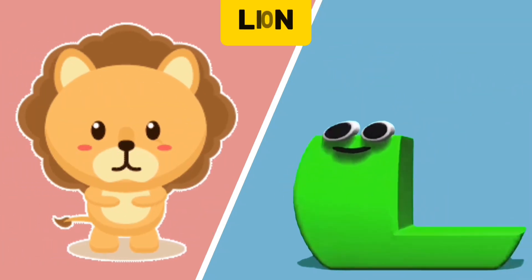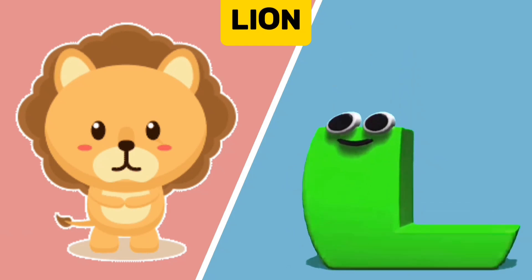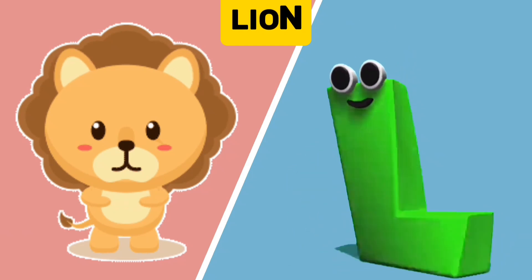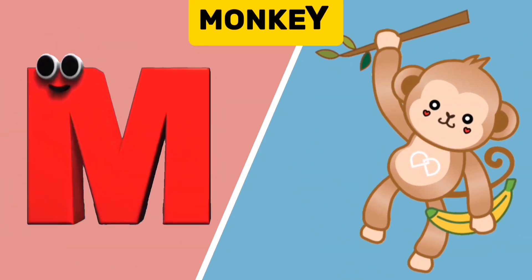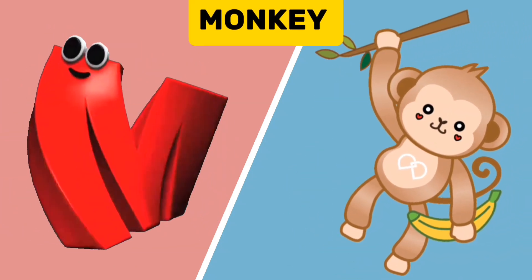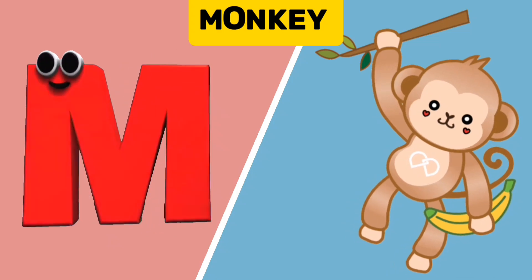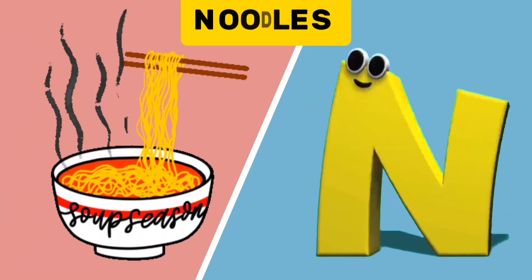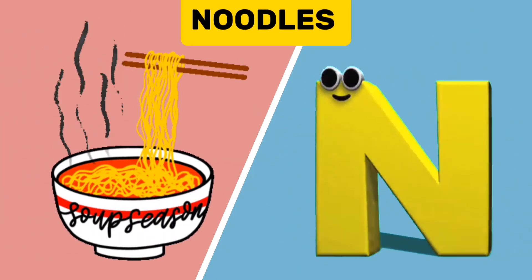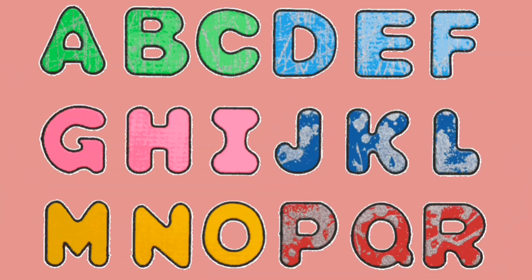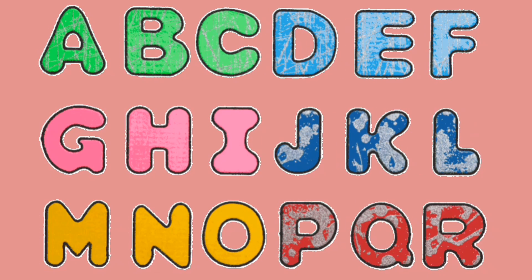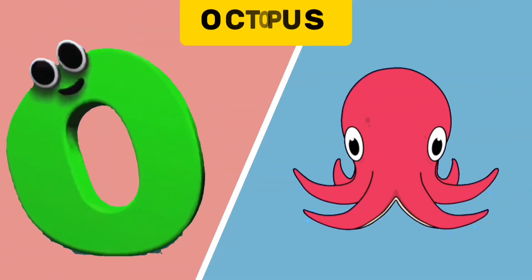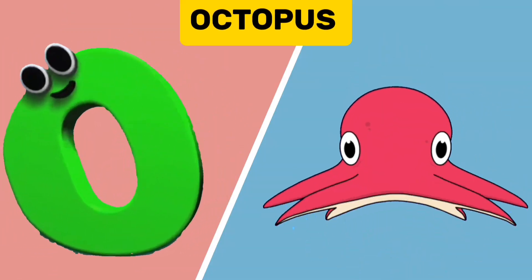L is for Lion. L, L. Lion. M is for Monkey. M, M. Monkey. N is for Noodles. N, N. It's the letters of the alphabet.